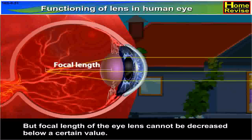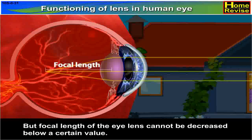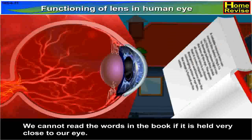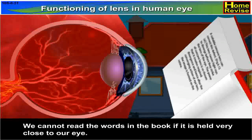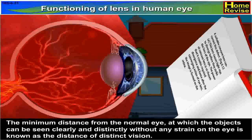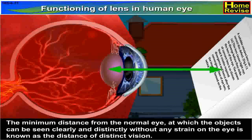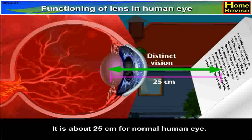The focal length of the eye lens cannot be decreased below a certain value. We cannot read words in a book if it is held very close to our eye. The minimum distance for the normal eye at which an object can be seen clearly and distinctly without any strain is known as the distance of distinct vision. It is about 25 cm for the normal human eye.